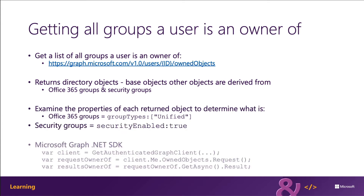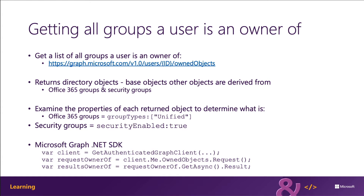The same request can be done using the Microsoft Graph .NET SDK by using the ownedObjects property on the me endpoint. By attempting to cast the directory object as a specific type in the SDK, you can determine what kind of object it is. For example, in this code on the slide, I'm first trying to cast the object to a Microsoft Graph Group object — that's an Office 365 group — and also trying to cast it as a DirectoryRole object — that's a security group. Depending on which one comes back as not null, I'll know what it is.